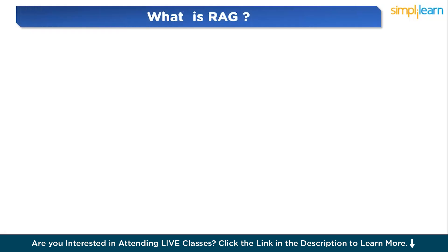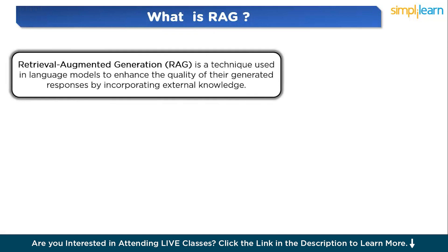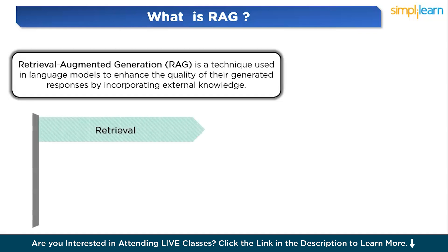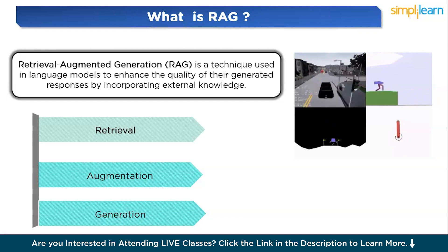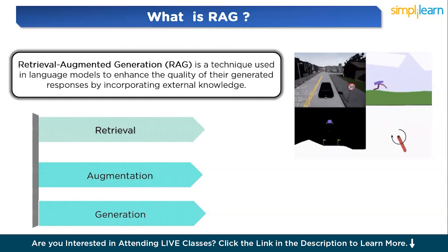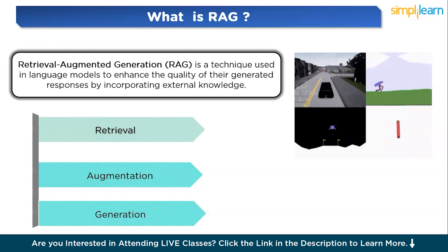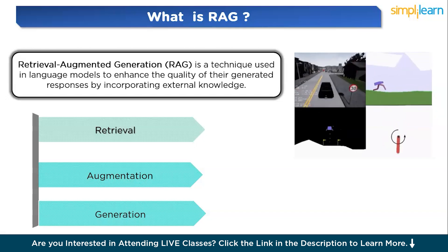Let's start with understanding what RAG is. RAG stands for Retrieval Augmented Generation. It is a technique used in large language models to enhance the quality of generated responses by incorporating external knowledge, instead of relying solely on the data the model was trained on. RAG dynamically retrieves relevant information from an external source such as a database or search engine, and uses that to augment the model's understanding, helping it generate more accurate and informed responses.